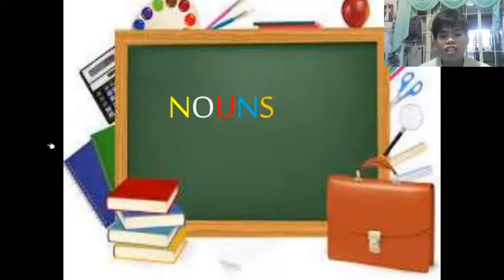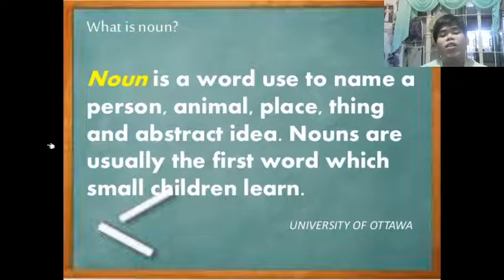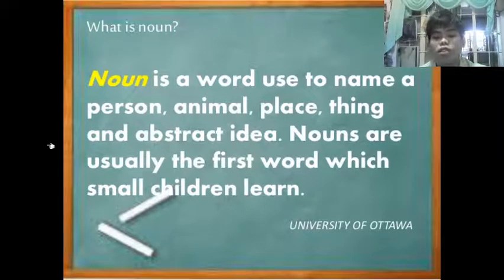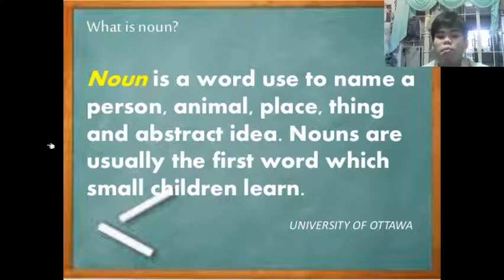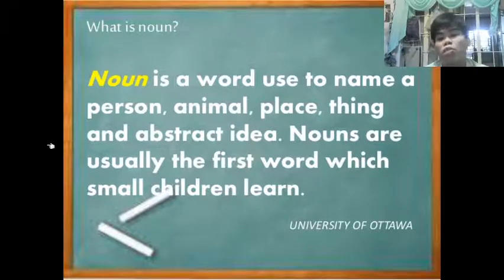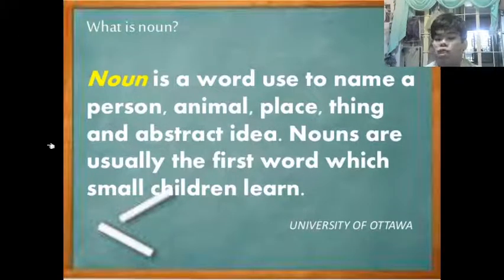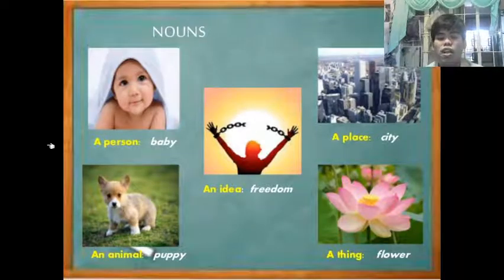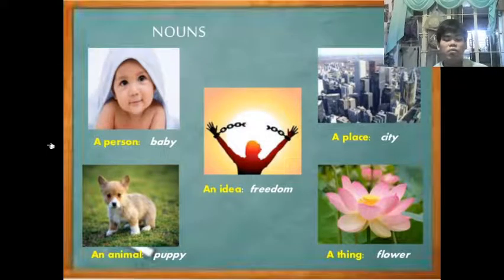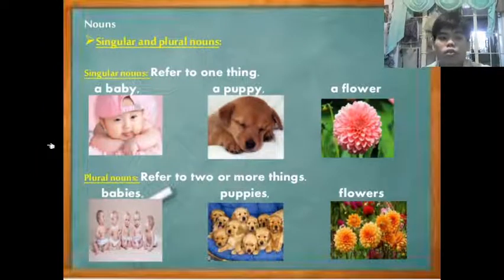Good morning everyone. Our lesson for today is the different kinds of nouns. Before we continue, let's first identify what a noun is. A noun is a word used to name a person, animal, place, thing, and abstract idea. Nouns are usually the first words small children learn. Basically, nouns are words that name something — a person, a place, an animal, or an abstract idea. Examples of nouns include: baby, freedom, city, flower, and puppy.